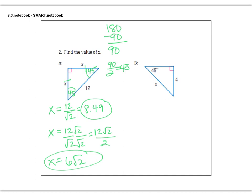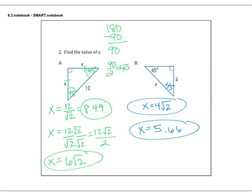Let's try another one. Here we have a 45-45-90 triangle — this corner has to be 45 degrees because it has to add up to 180. This time I'm given a leg. A leg is 4, and I have to find the hypotenuse. So we know we're going to take 4 multiplied by root 2. Is this a simplified answer? Technically, it is — it is an exact answer. But I can also get the rounded answer, which is 4 times square root of 2 into my calculator, which is 5.66. So again, we have the exact answer and the rounded answer.